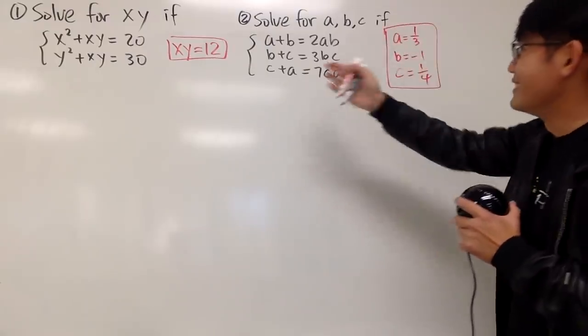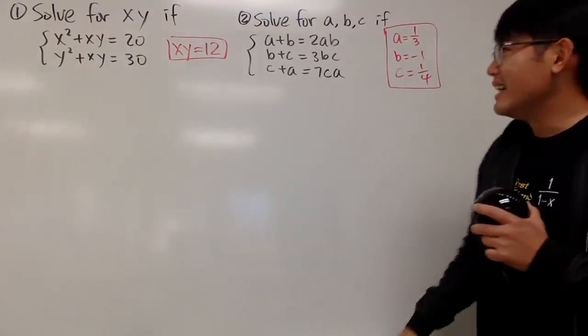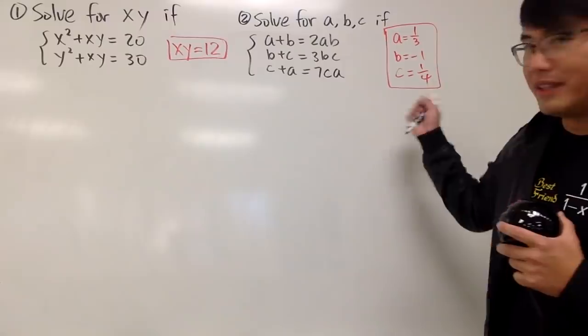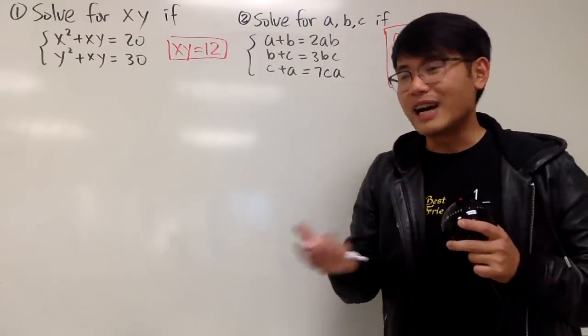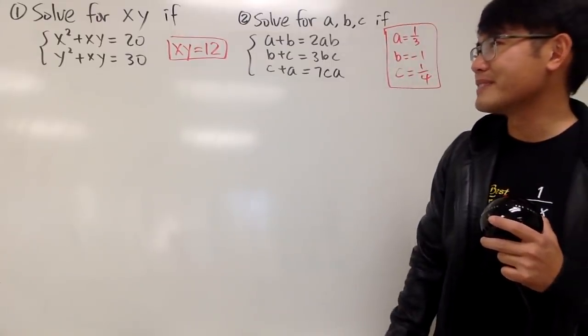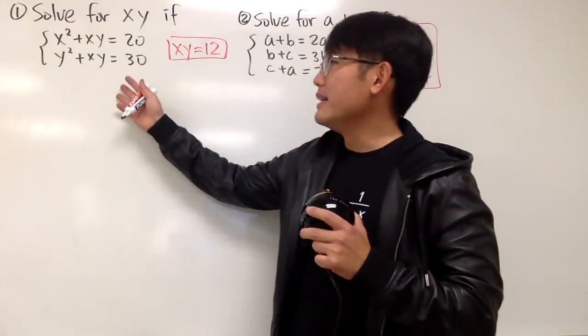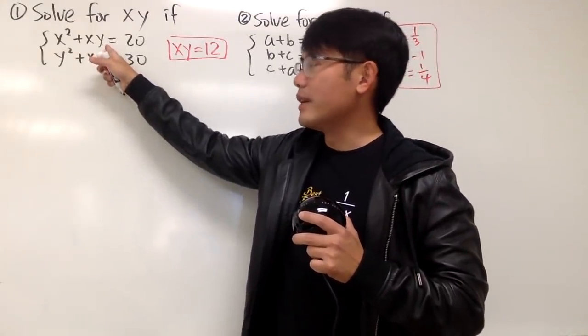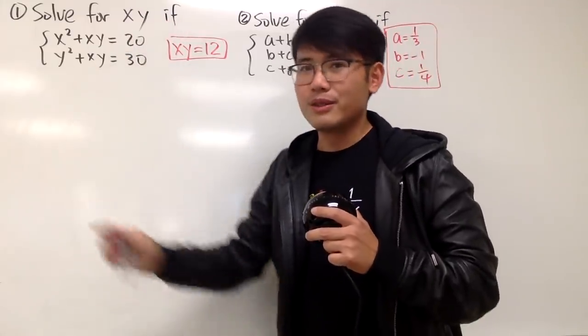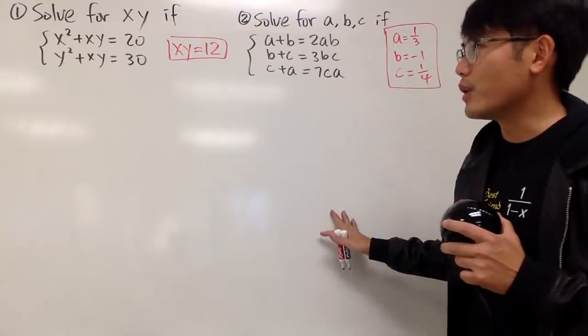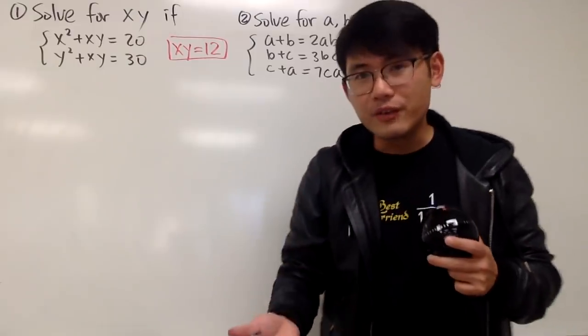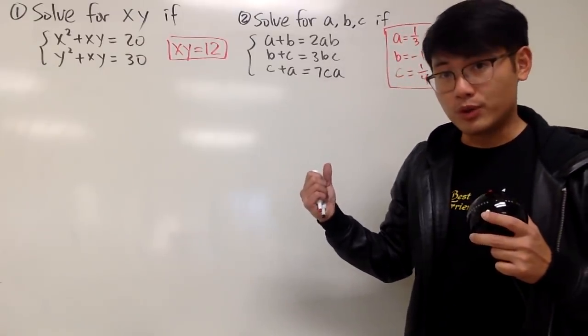Alright, so these right here are the answers. Last time, in my extreme algebra question, we didn't solve for a, b, and c individually, but this time, we did it. And now I will show you guys how to approach them. The idea is that you are not going to solve for them in the usual sense. Like, for example, right here, it's not a good idea to isolate the y from this equation, and then plug in the expression into the y's here. Don't do that. Otherwise, the equation will get pretty crazy.